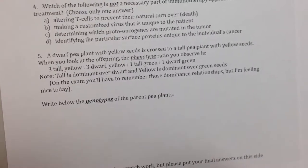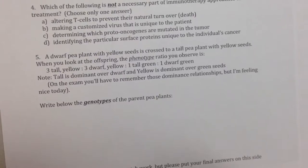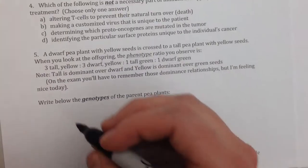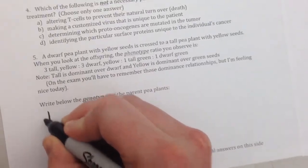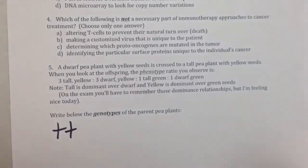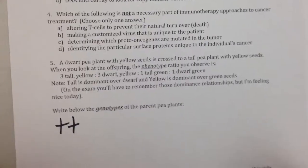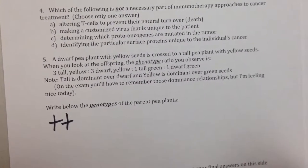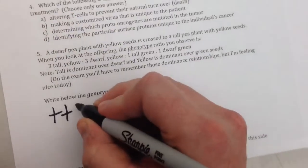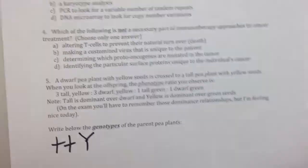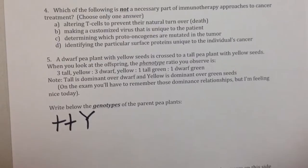So first, the pea plant that you're looking at is a dwarf pea plant with yellow seeds. You know because the professor told you that the dwarf pea plant has to be the recessive genotype, so it's definitely little t, little t. And yellow is dominant, so we know for sure that this first pea plant has at least one capital Y.